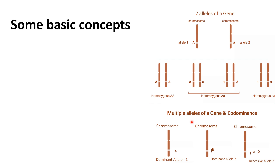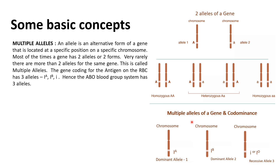Our ABO blood group system has multiple alleles. The gene coding for the antigen on the RBC has three alleles: IA, IB and IO (or small i). Hence the ABO blood group system has multiple alleles.